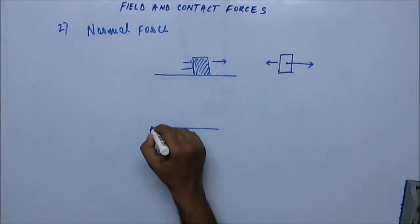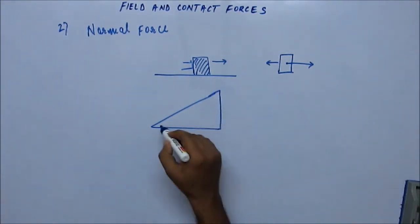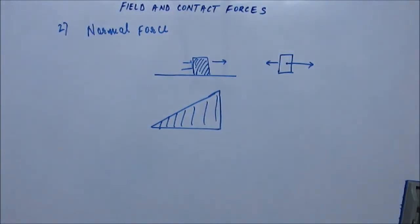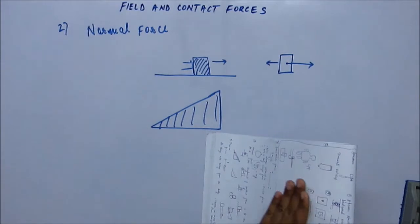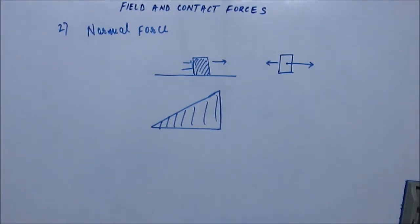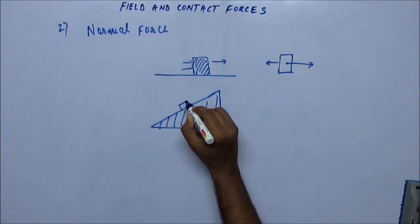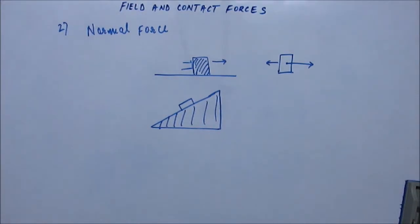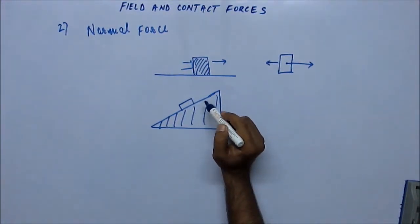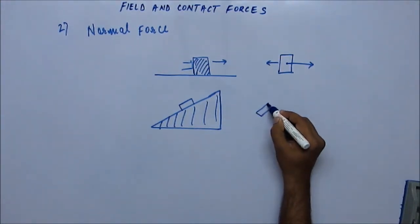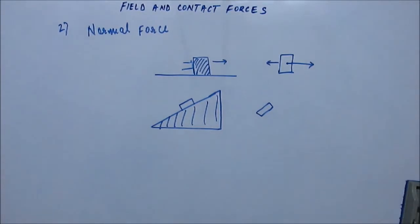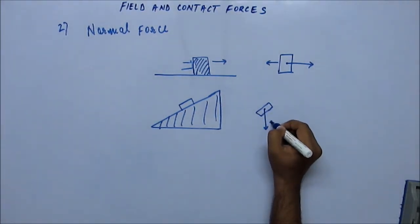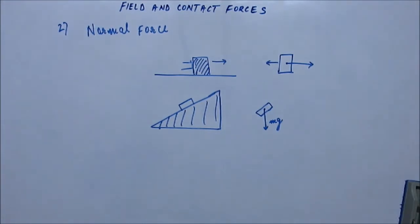Similarly, if we have a triangular wedge — a solid body with an inclined plane — and there is a block kept whose surface is parallel to the surface of the wedge, let's analyze the forces acting on that block. One force is always gravitational force — the earth pulls everything downward, so one force is vertically downward, which is mg. The other force will be due to contact between the block and the wedge, and that contact force is the normal reaction.